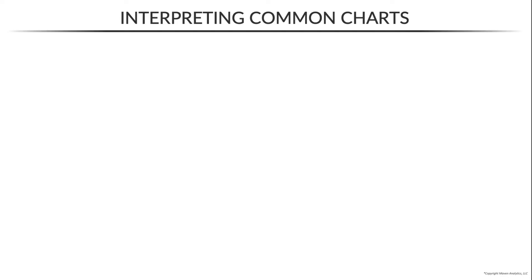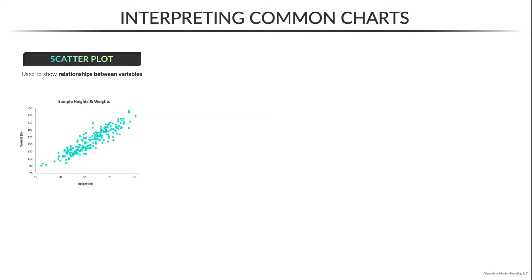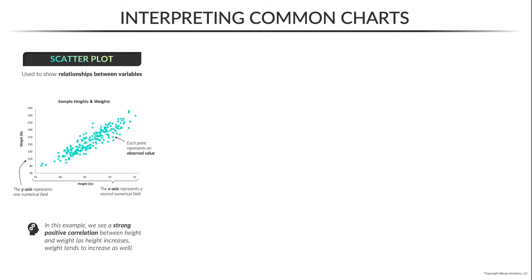The last charts we'll talk through are a bit more specialized but still quite common, starting with the scatter plot, which is specifically used to show the relationship between two variables. In this example, we're looking at heights and weights for a population sample. The y-axis represents one numerical field — weight in pounds — and the x-axis represents a second numerical field — height in inches. Each point on the plot represents an observed value, or one individual in our sample. We see a strong positive correlation between height and weight — as height increases, weight tends to increase as well. Keep in mind that correlation does not imply causation: a scatter plot can tell us that two variables move in the same direction, like shark attacks and ice cream sales, but it cannot tell us that one variable caused a change in the other.